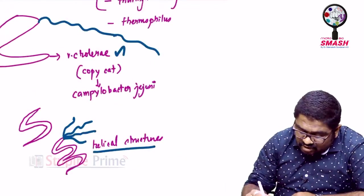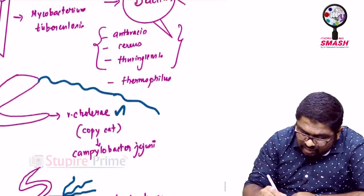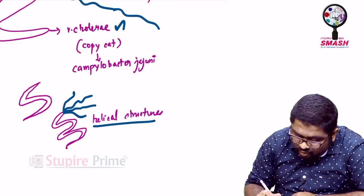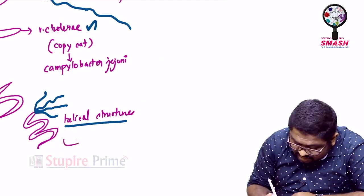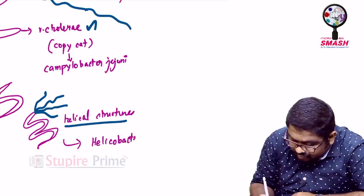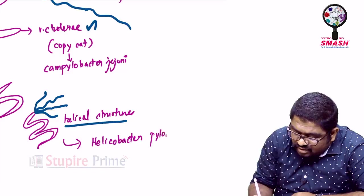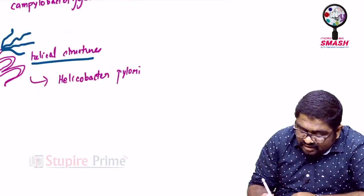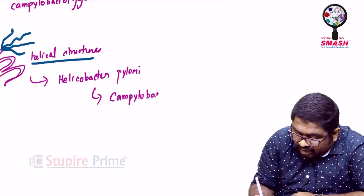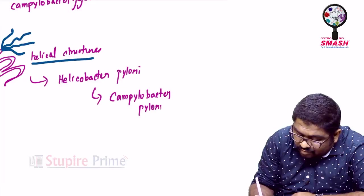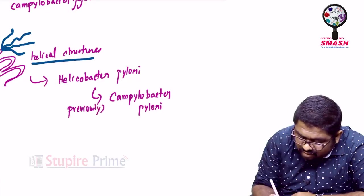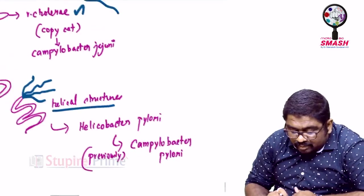Now, I told you Vibrio cholerae can be mimicked by Campylobacter jejuni. If it is Campylobacter jejuni, you will have a single flagella. But if at all you go towards the organism like the one who has a helical structure with a tuft of flagella, then this can explain about Helicobacter pylori. What is the beauty here? Previously, Helicobacter pylori was named as Campylobacter pylori. It was previously Campylobacter pylori. Why is it now called as Helicobacter pylori?